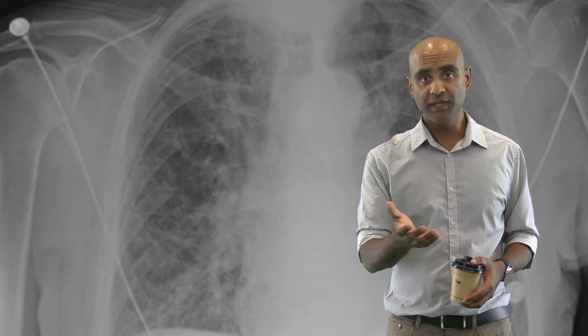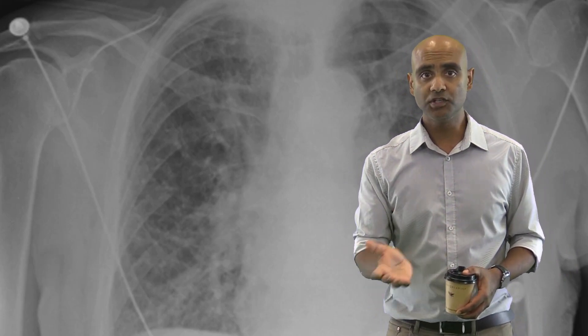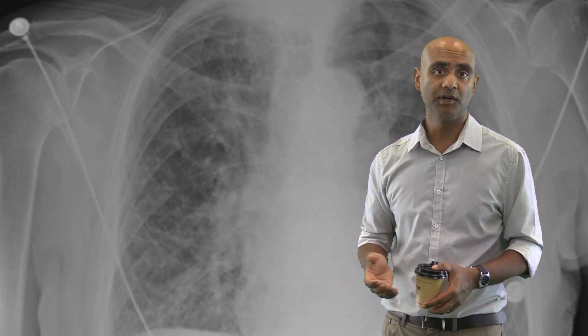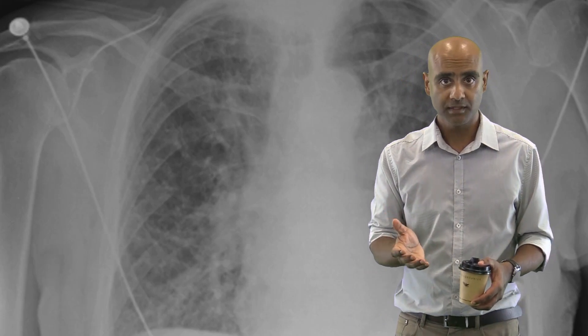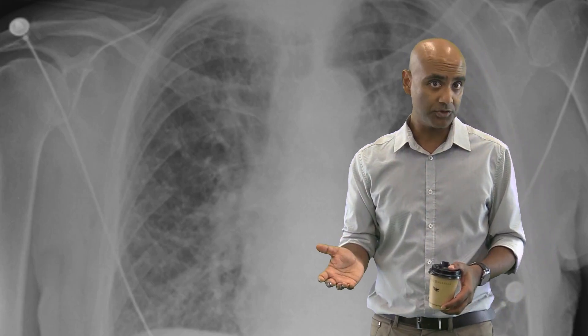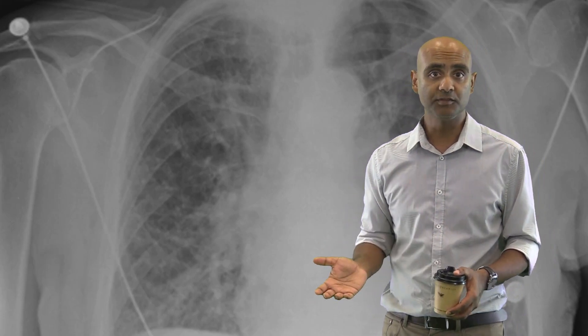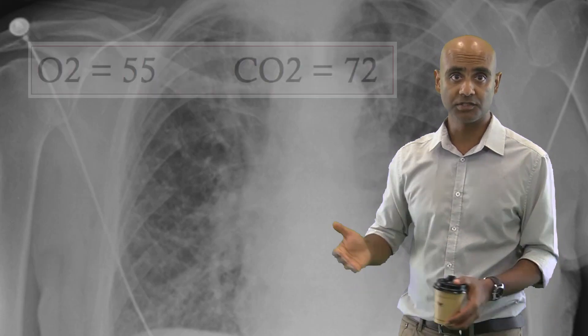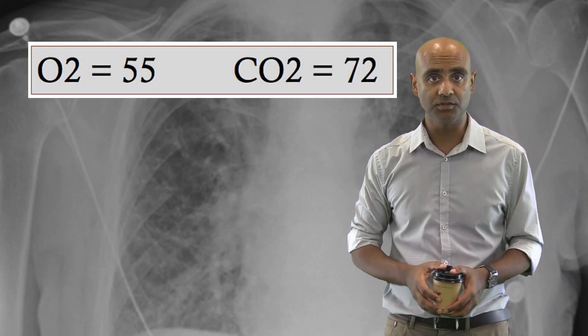He is a smoker of many years, but has no documented lung disease. And considering the acuteness of his presentation, it was thought reasonable to commence him on CPAP, starting at around 5 to 10 centimetres of water and with an FiO2 of around about 40%. An arterial blood gas is performed about 10 minutes later, which surprisingly shows a PaO2 of 55 and a PaCO2 of 72.